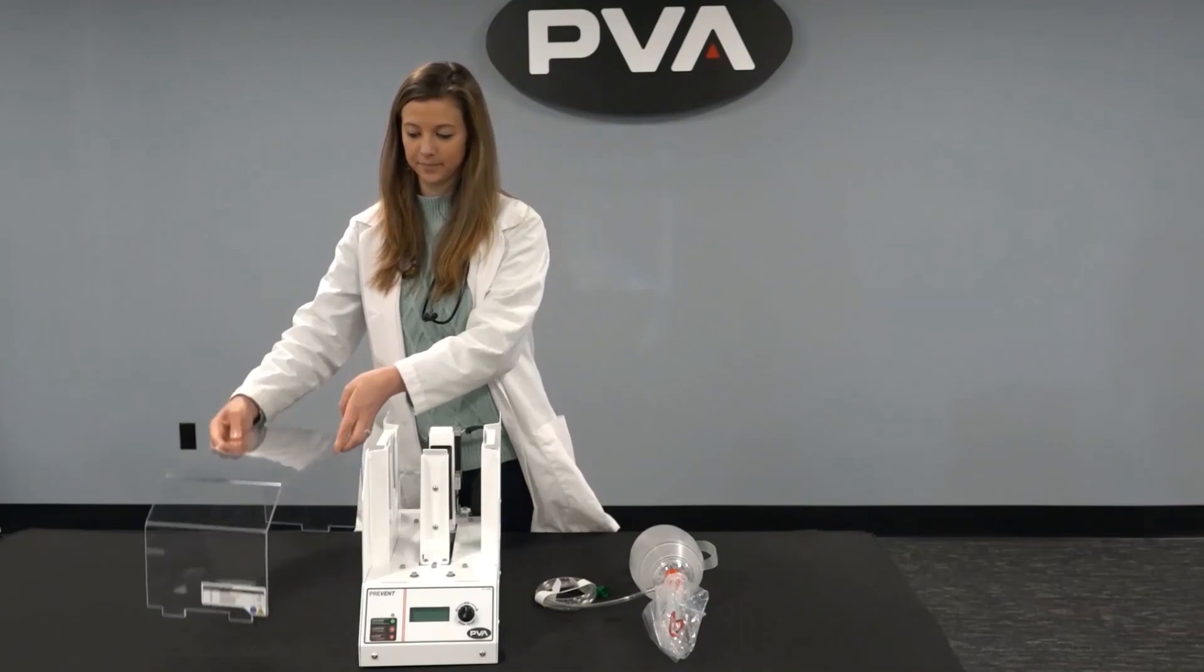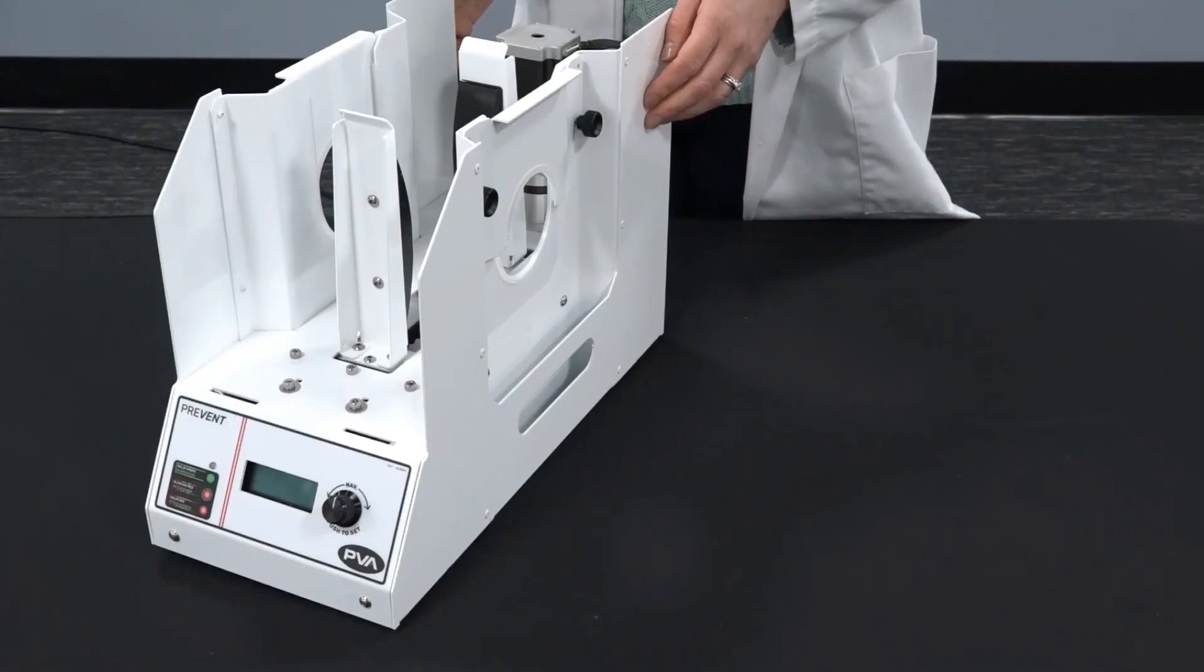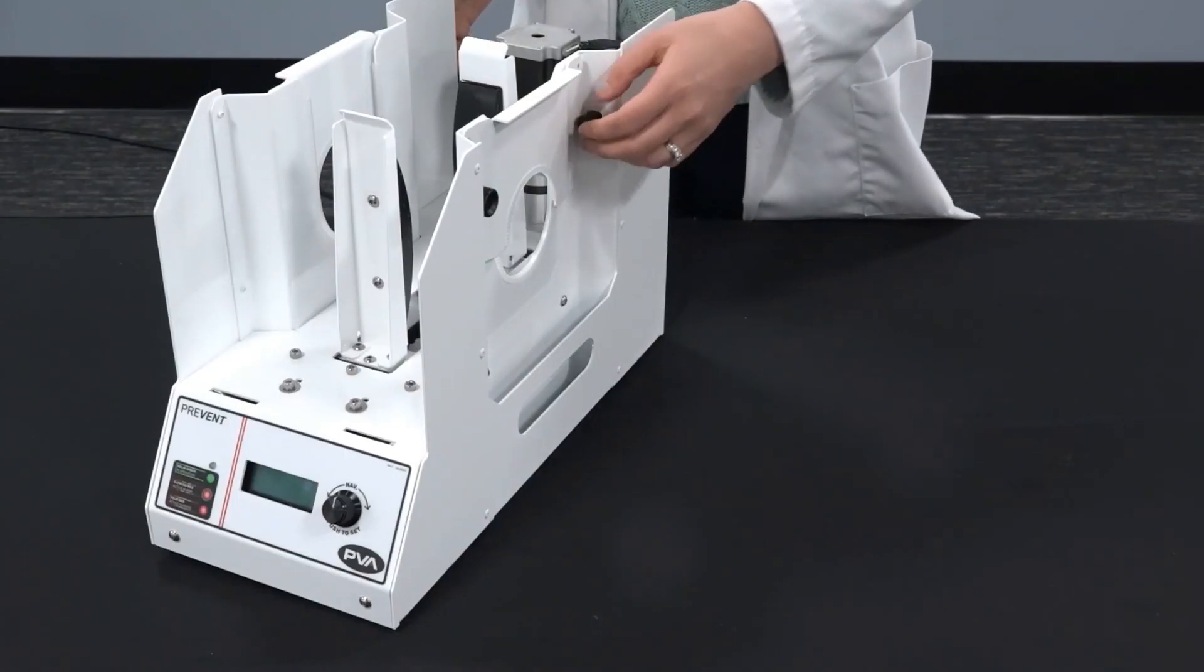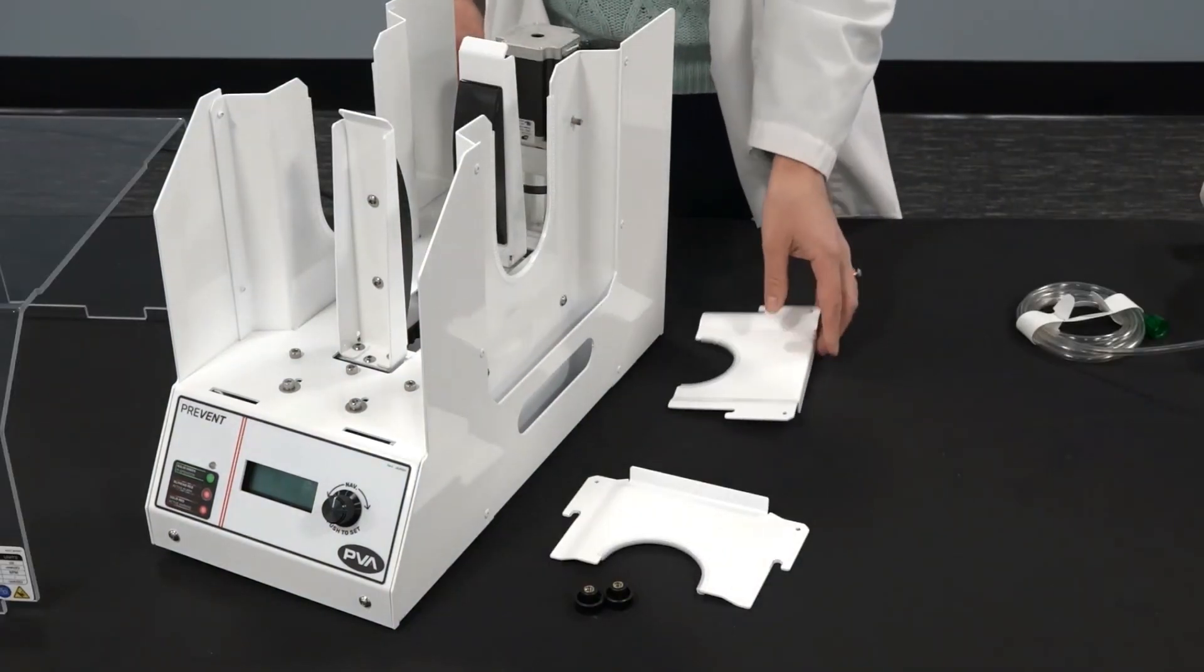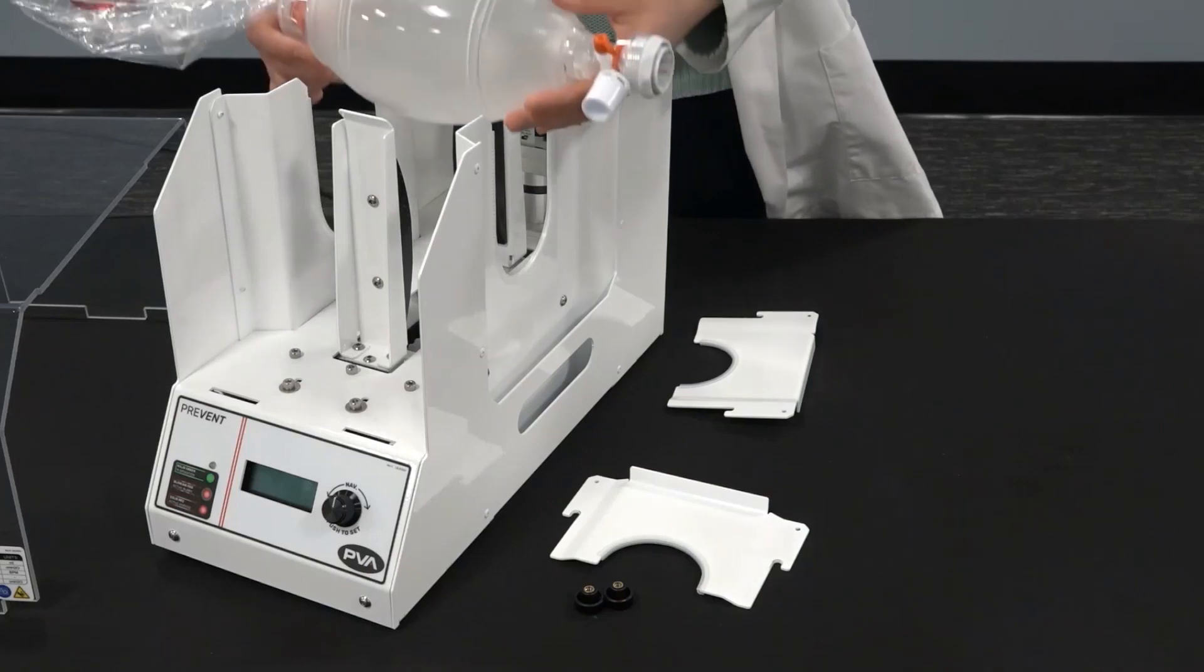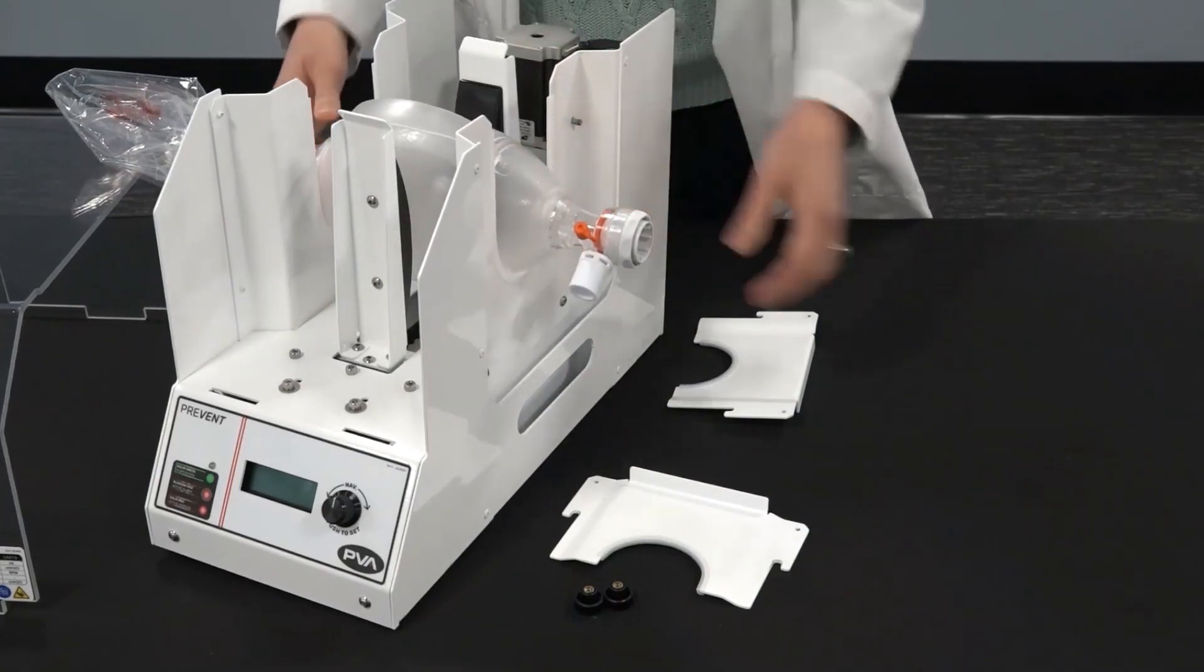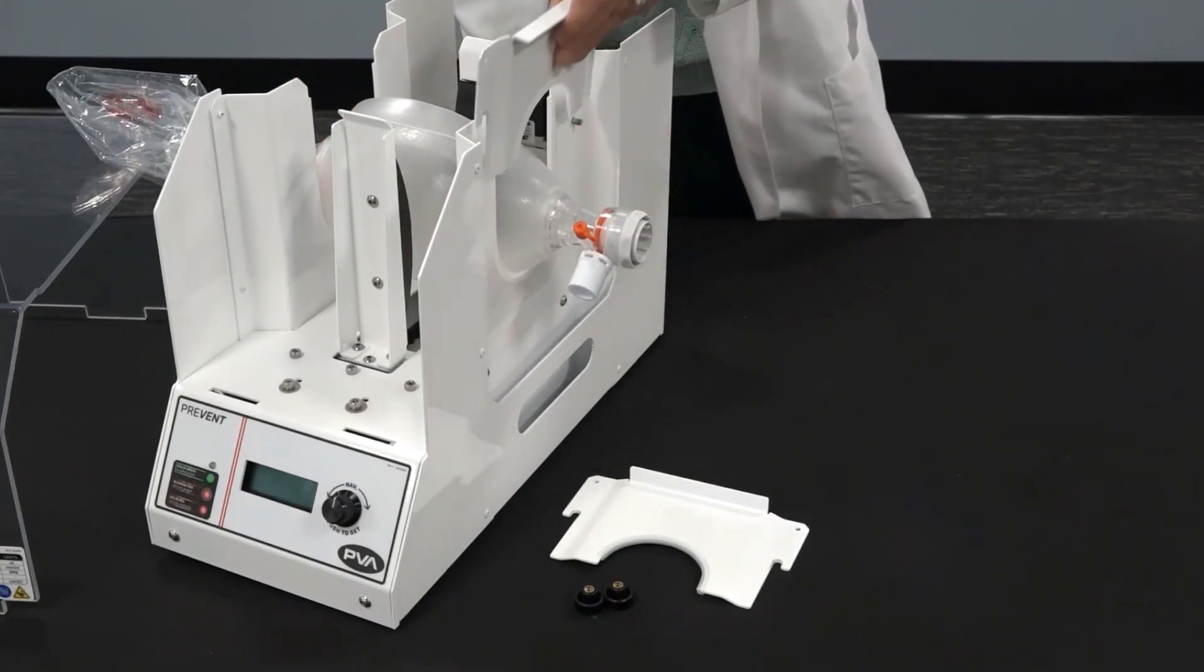Then remove the safety brackets. Then place the resuscitation bag centered between the arms. Reattach the safety brackets.